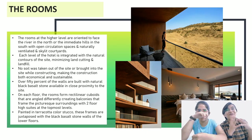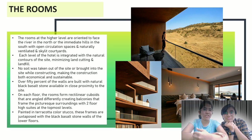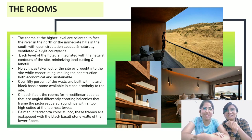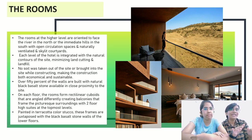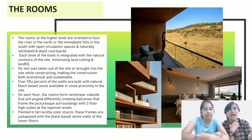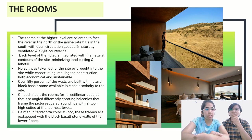Now comes the rooms. You can see in the pictures how spacious and beautiful the rooms are. The rooms at the higher level are oriented to face the river in the north or the immediate hills in the south, with open circulation spaces and naturally ventilated and sky-lit courtyards. Each level of the hotel is integrated with the natural contours of the site, minimizing land cutting and landfills. It was taken care that no soil was taken out of or brought into the site during construction, making the construction both economical and sustainable.